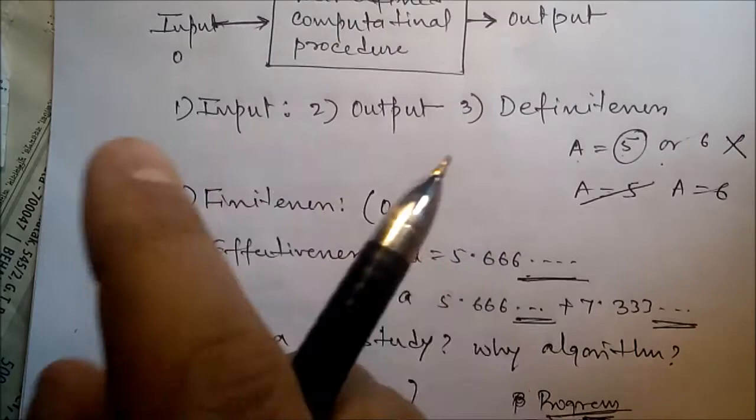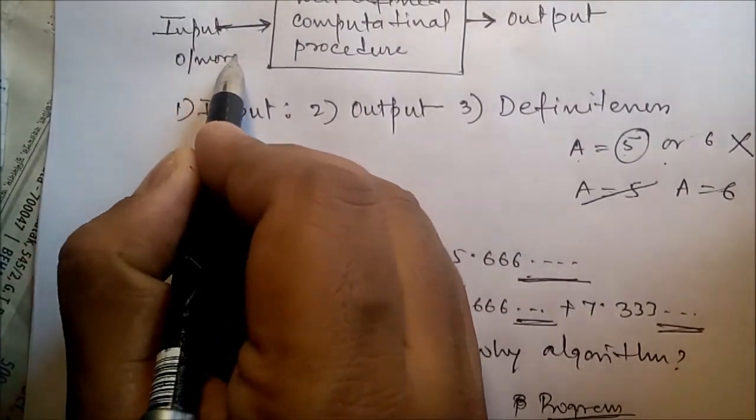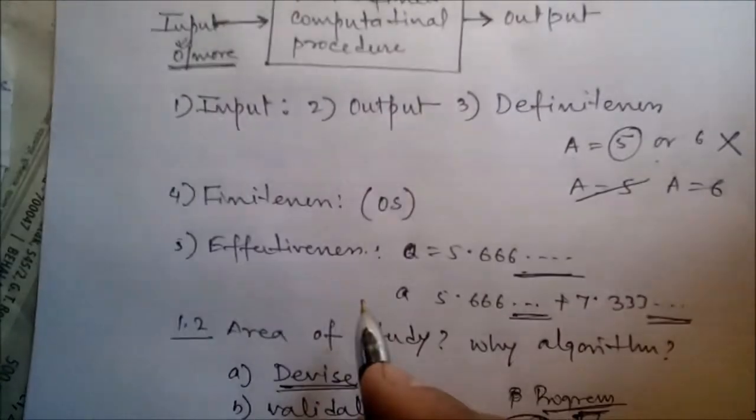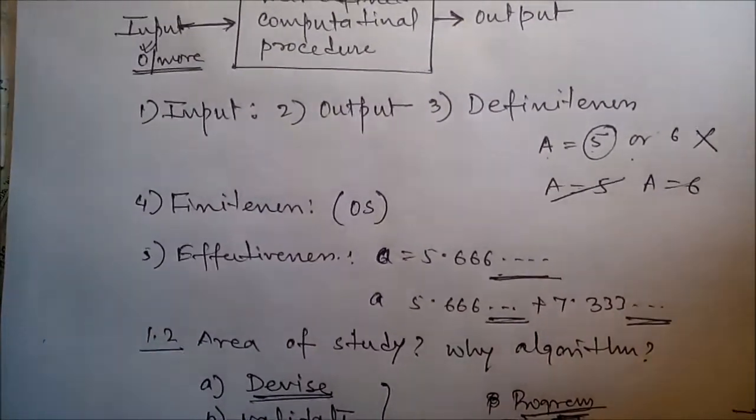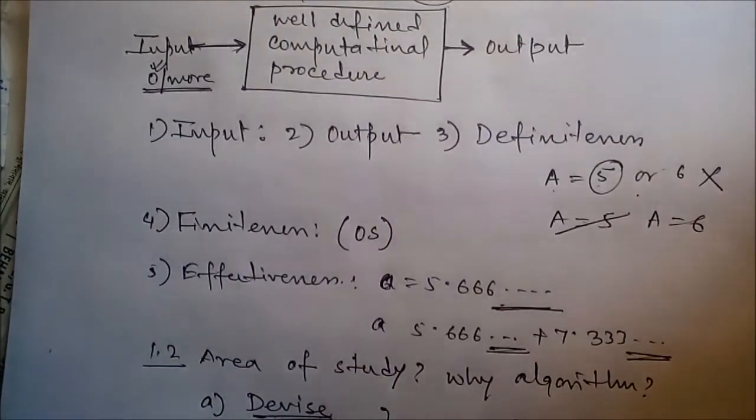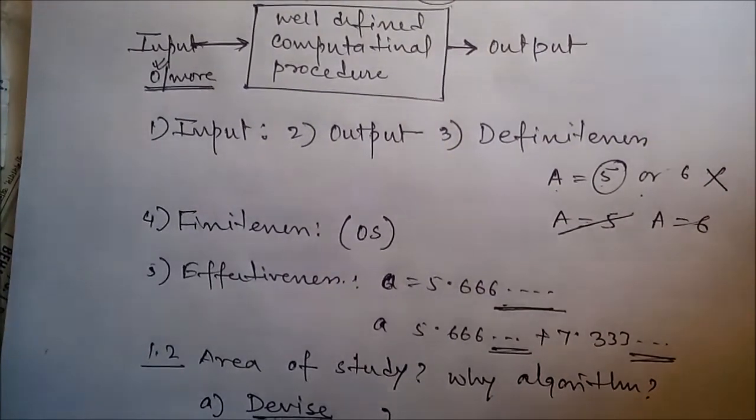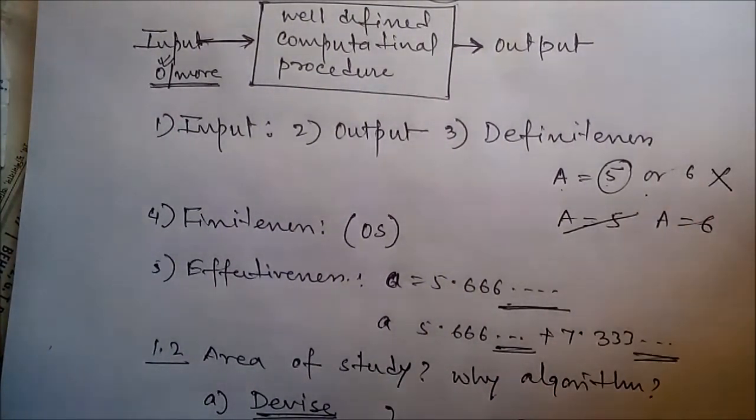Zero or more input - suppose zero input means a simple program displaying 'Hello World'. If we're writing a program in Java, C++, or C, like 'Hello World', there's no input but one output: the message 'Hello World'. Next, output: at least one quantity is produced. At least one output should be there.